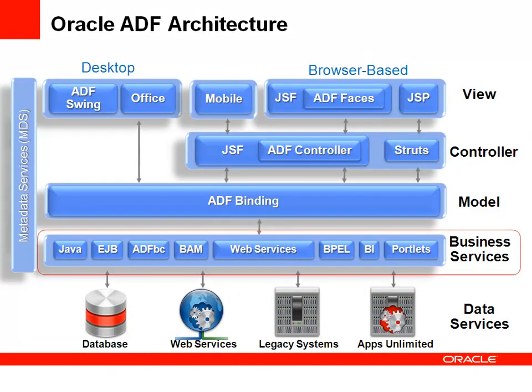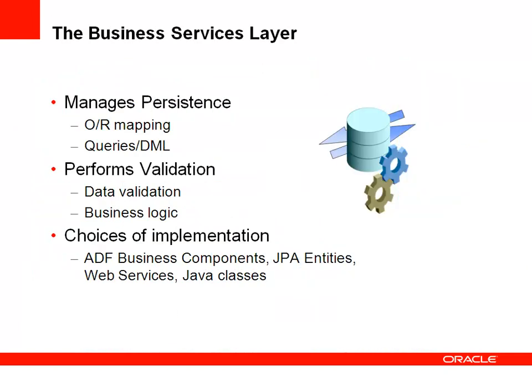This is an ADF architecture diagram, and the layer we're going to focus on today is the Business Services layer. The Business Services layer is responsible for allowing us to interact with our data sources — specifically, managing the persistence of data to our databases, handling object-relational mapping between Java objects and relational tables, executing queries and data manipulation commands, and performing validation and running business logic.